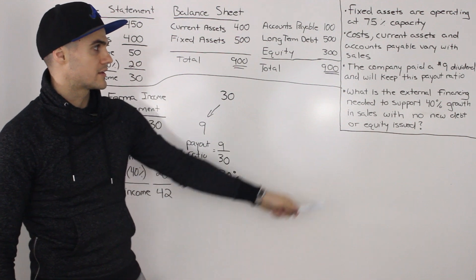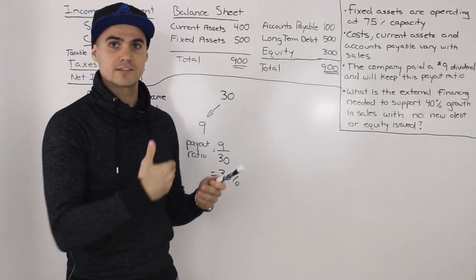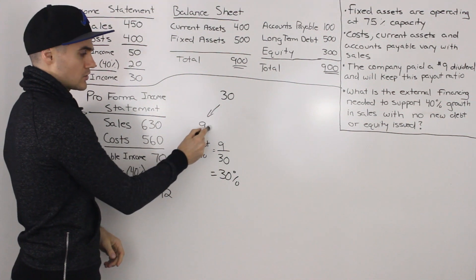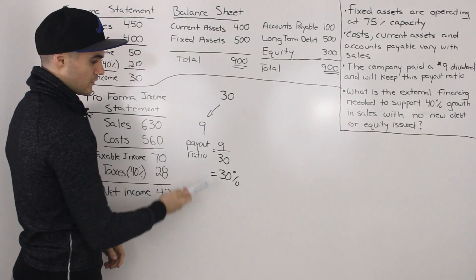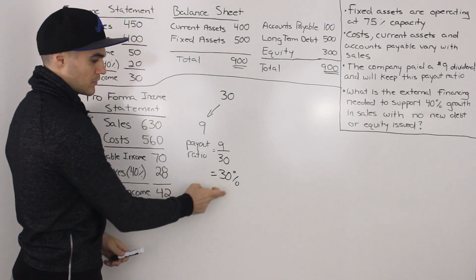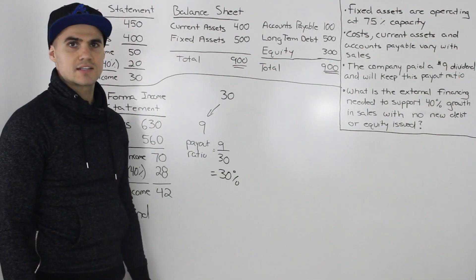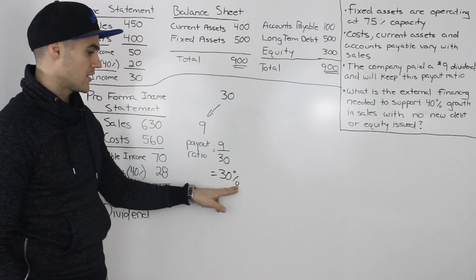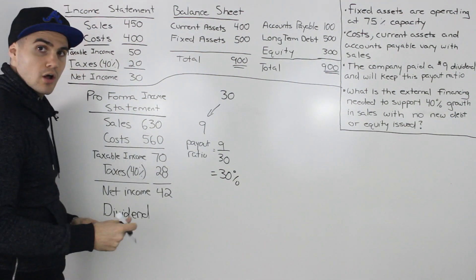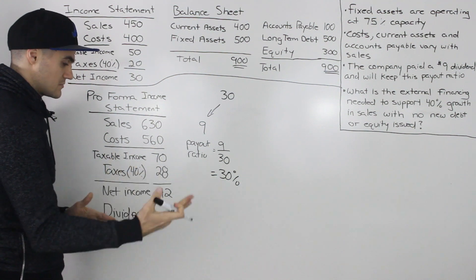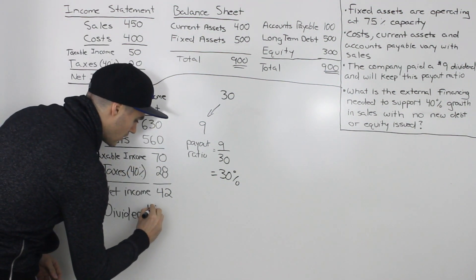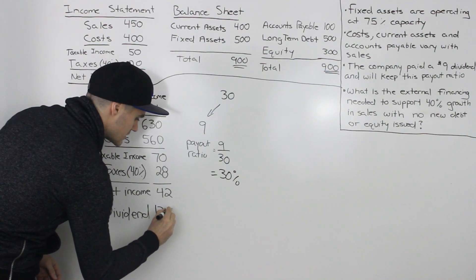Now we're also told that the company paid a $9 dividend and it's going to keep that payout ratio. So on this net income of 30, $9 was paid as a dividend. So we could figure out what the payout ratio is, which is dividends over the net income. And we would get 30% for that. And since the company is maintaining that payout ratio of 30%, then we know on a net income of $42, the dividend projected to be paid out would be 30% of 42, which would give us 12.6.